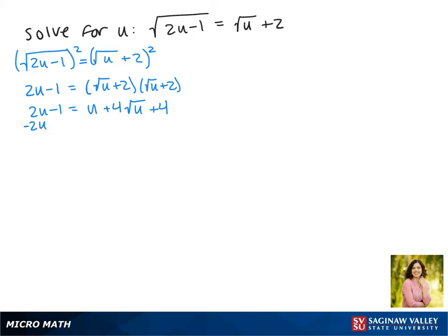Now to factor this we need to have it set equal to 0, so we're going to move the 2u and move the 1. We get 0 equals negative u plus 4 square root of u plus 5. We don't want that negative as our leading coefficient, so we're going to get rid of it, divide everything by a negative 1.